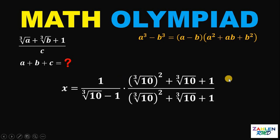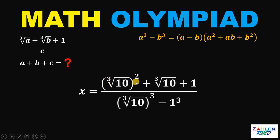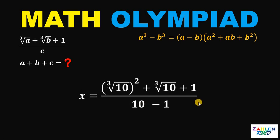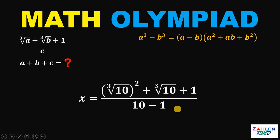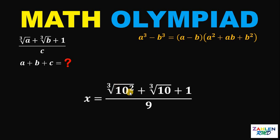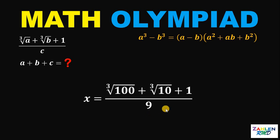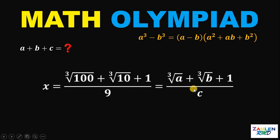Multiplying out: the numerator becomes cube root of 10 squared plus cube root of 10 plus 1, and the denominator becomes cube root of 10 cubed minus 1 cubed. Cube root of 10 cubed is just 10 and 1 cubed is 1, so the denominator is 10 minus 1, which equals 9. Also, cube root of 10 squared can be written as cube root of 100. So our expression is now in the form cube root of 100 plus cube root of 10 plus 1, all over 9.